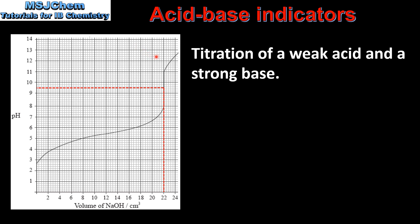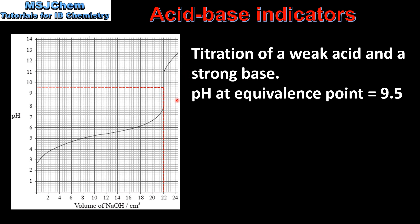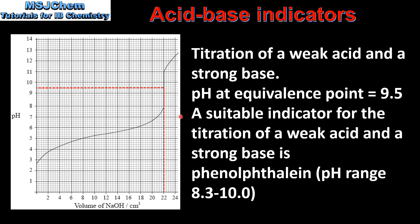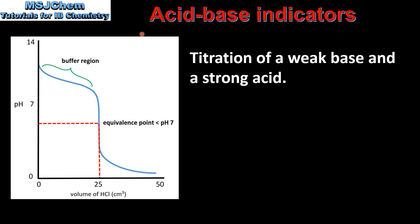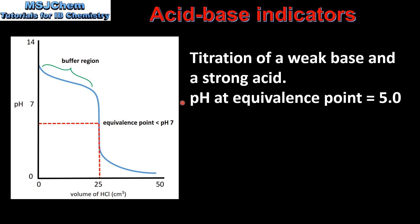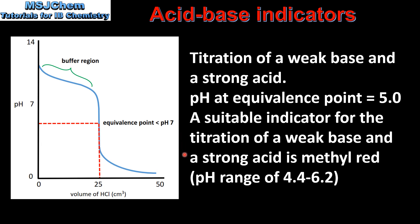Next we look at choosing an indicator for a titration, starting with the titration of a weak acid and a strong base. From the graph we can deduce that the pH at the equivalence point is 9.5. A suitable indicator is phenolphthalein which has a pH range of 8.3 to 10.0, because the pH at the equivalence point lies within the pH range of the indicator. For the titration of a weak base and a strong acid, the pH at the equivalence point is 5.0. A suitable indicator is methyl red which has a pH range of 4.4 to 6.2, because the pH of the equivalence point lies within the pH range of the indicator.